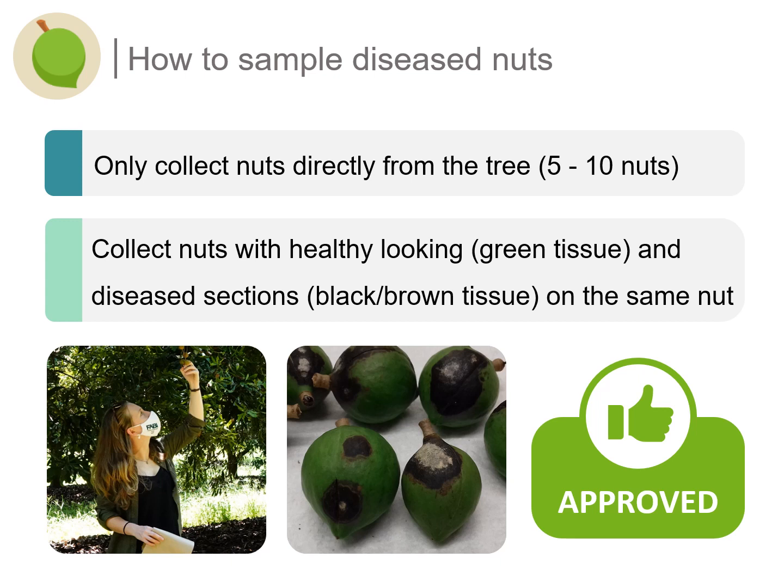To start off with nuts, only collect nuts that are still directly attached to the tree, preferably between 5 and 10. Collect nuts that have both healthy as well as diseased tissue — in other words, a combination of green as well as black-brown lesions, all of that being on the same nut.